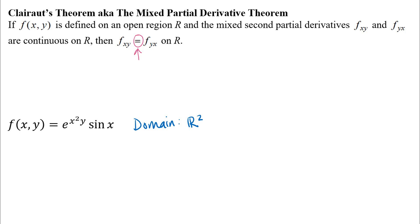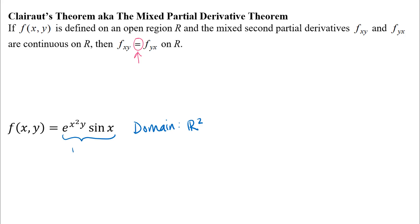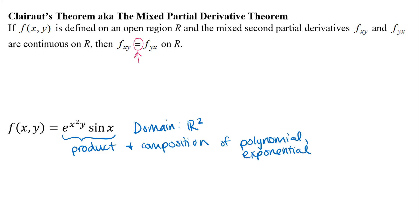The other thing we want to think about are the mixed second partial derivatives, but I'd like to think about them without actually finding them. Our original function f(x, y) is a product and composition of functions we know a lot about: a polynomial function x²y, an exponential function, and a trigonometric function — the sine function.